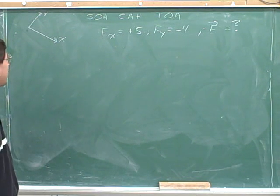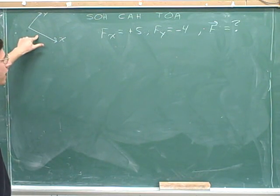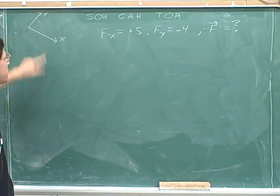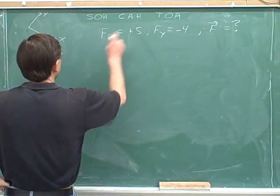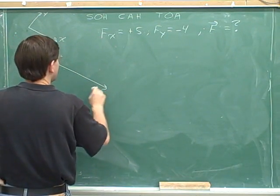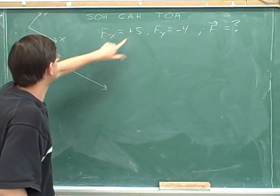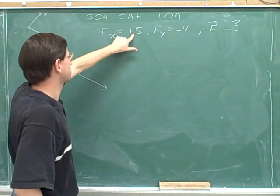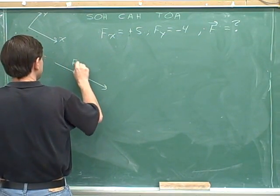Notice that we're dealing with a case here where the axes are not horizontal and vertical—non-horizontal and vertical axes. The x component is positive 5, and notice that it's pointing in the same direction as the positive x axis because it's positive 5.